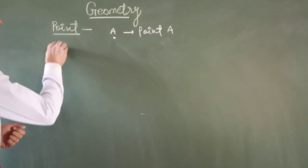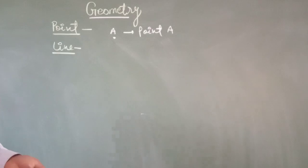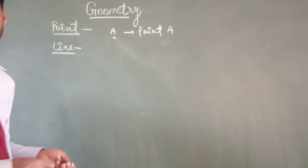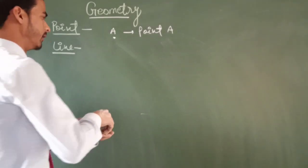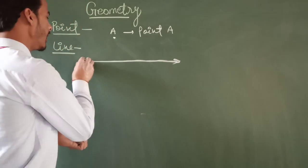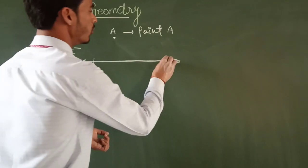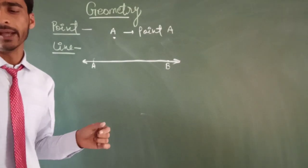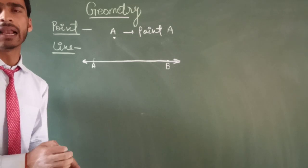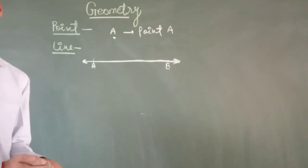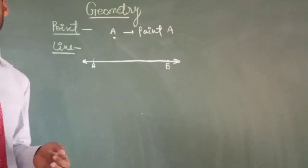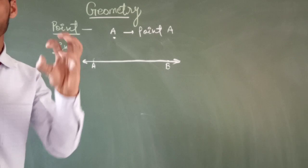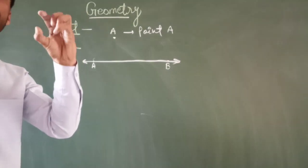Now, the second topic is line. A group of many points moving endlessly in both directions is called a line. A line has no ends — it extends in opposite directions, which means that a line does not have a fixed length. Thus, it cannot be measured. In geometry, when you say a line, it means a straight line.